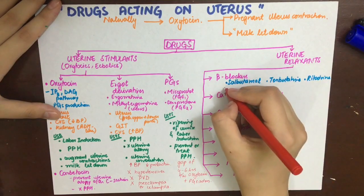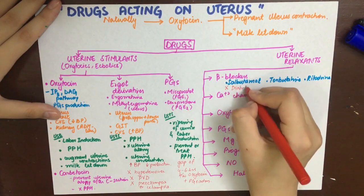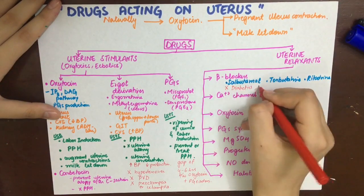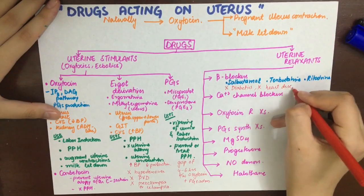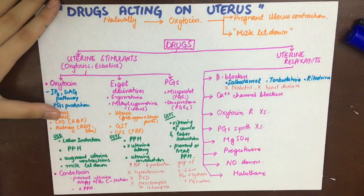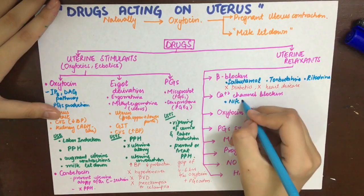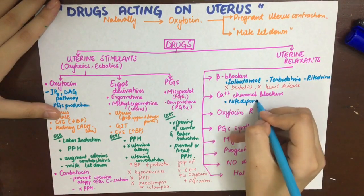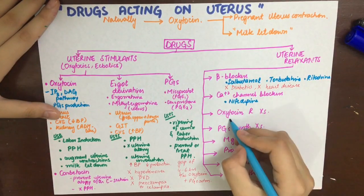Calcium channel blockers, for example nifedipine, can be used as tocolytics. They decrease calcium influx and thus block uterine contraction, with fewer side effects than beta-agonists. Oxytocin receptor blockers — the chief drug being atosiban — cause uterine relaxation and also have fewer side effects.